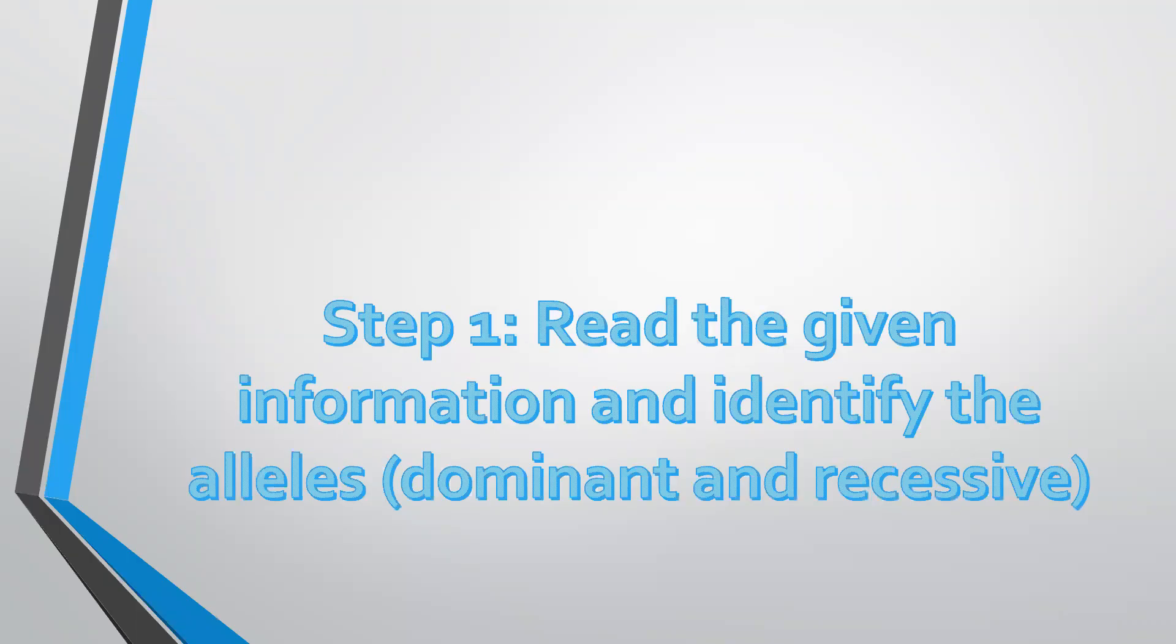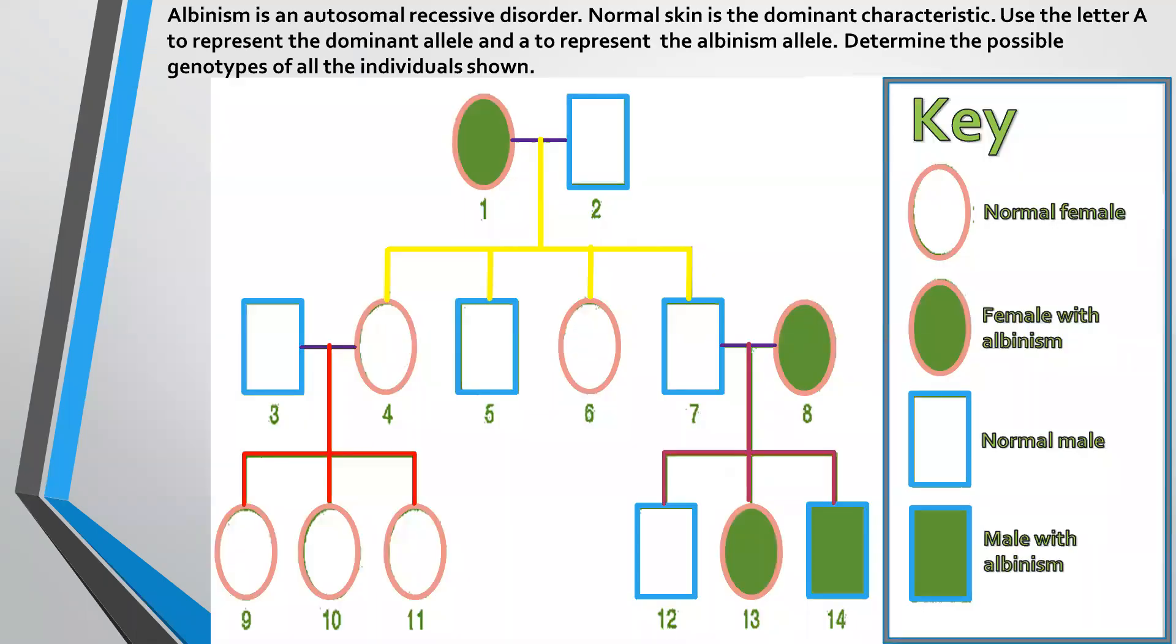So the first step is to read the information that's given, you identify the alleles, which one is dominant, which one is recessive, which letters are going to be used. You'd also look at the key and from the key it will indicate the phenotypes of the various individuals that are shown there.